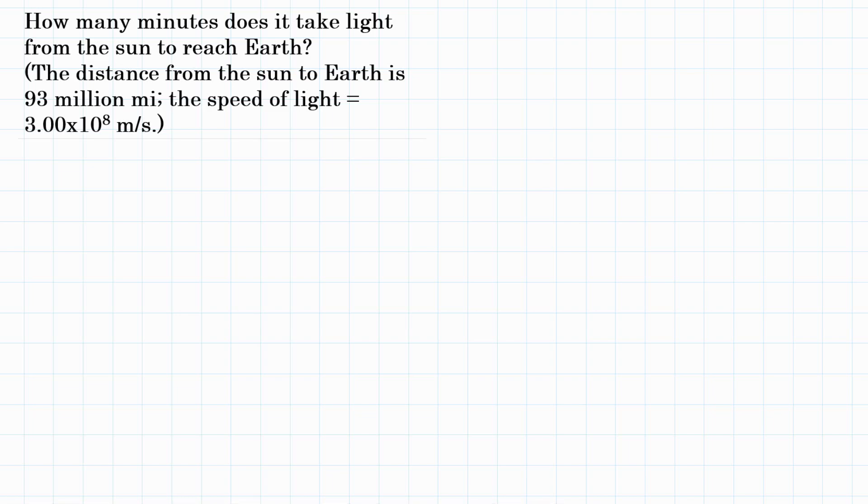Alright everybody, the problem states: how many minutes does it take light from the sun to reach Earth? The distance from the sun to Earth is 93 million miles and the speed of light is 3.00 times 10 to the 8th meters per second.